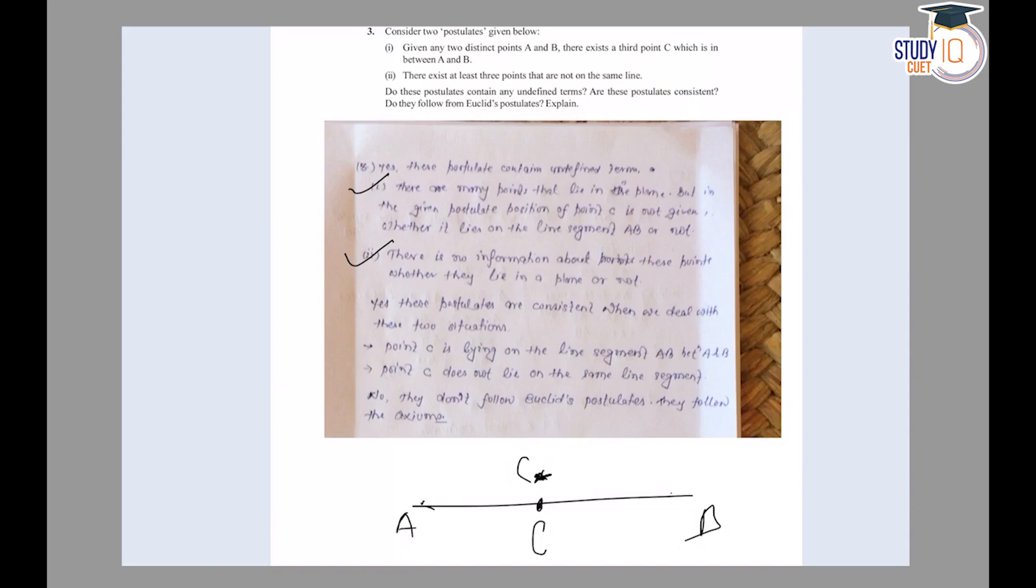Are these postulates consistent? These postulates can be consistent if the following two situations are considered: if point C is on the line segment between A and B, then the postulate is consistent. If it does not lie on the same line segment.